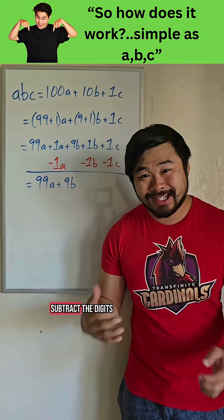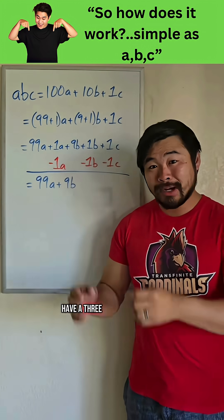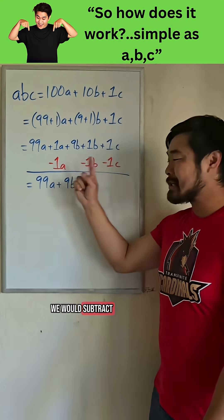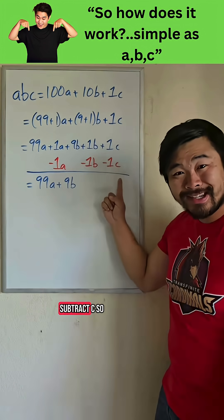Then the next step was to subtract the digits. So if we have a three-digit number ABC, we would subtract A, subtract B, subtract C.